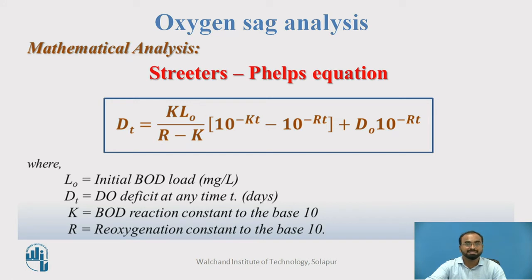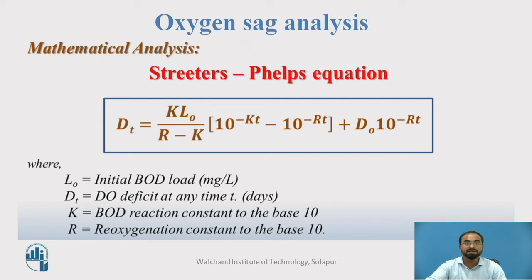To analyze the DO content at every stage as the stream flows with respect to distance, we use the Streeter-Phelps equation: Dt = (K × L0) / (R − K) × (10^(−KT) − 10^(−RT)) + D0 × 10^(−RT). Here, Dt is the DO deficit at any time T (in days), L0 is the ultimate BOD resulting from the addition of organic waste at the disposal point, K is the BOD reaction constant to base 10, and R is the reoxygenation constant to base 10.